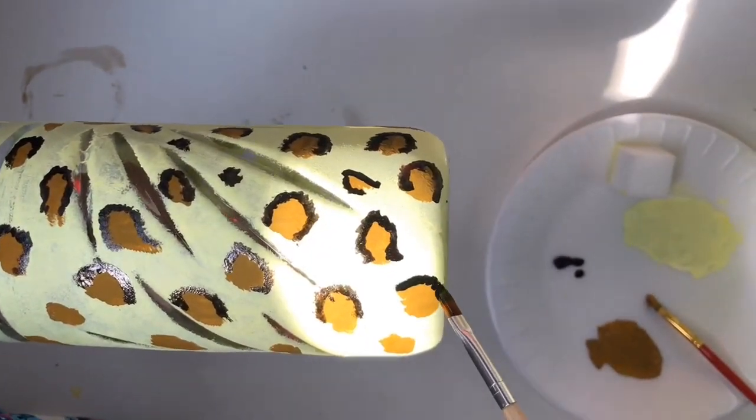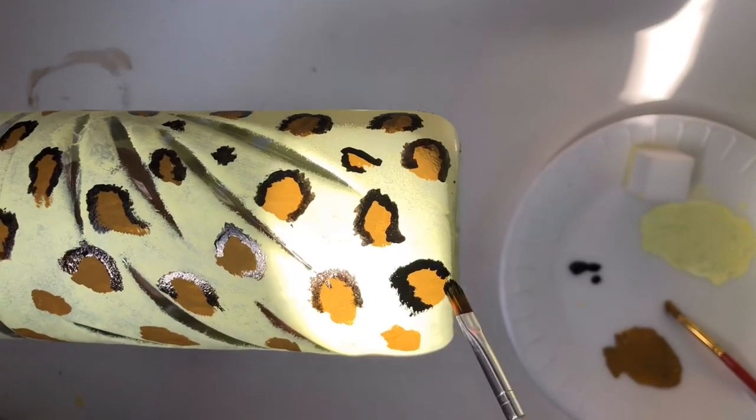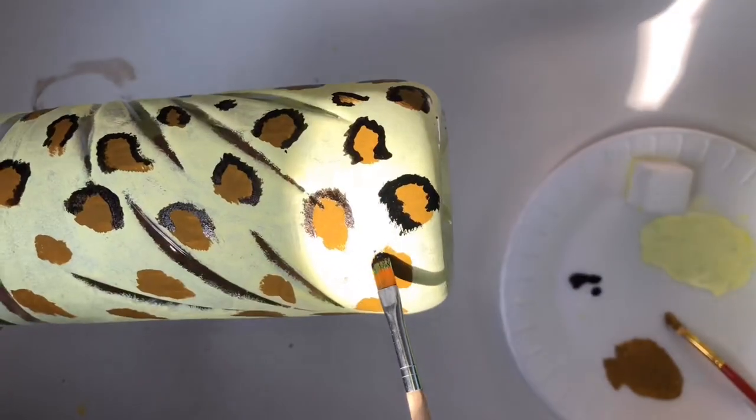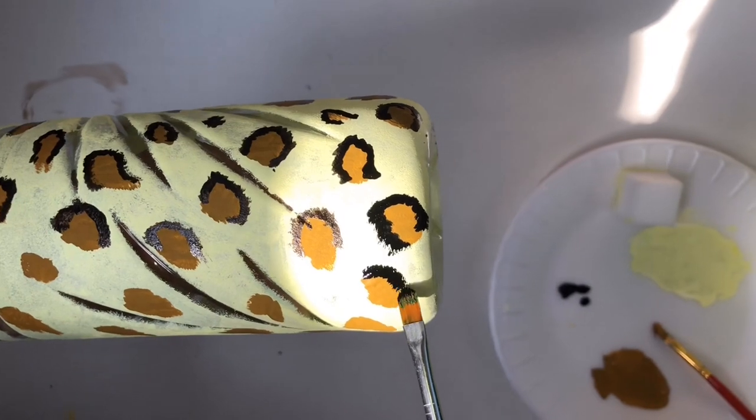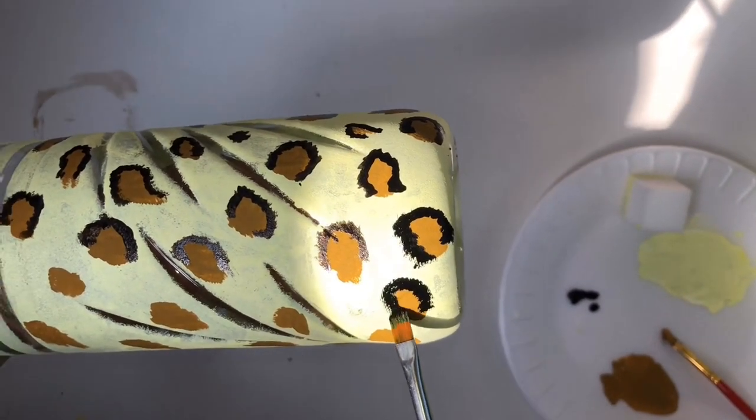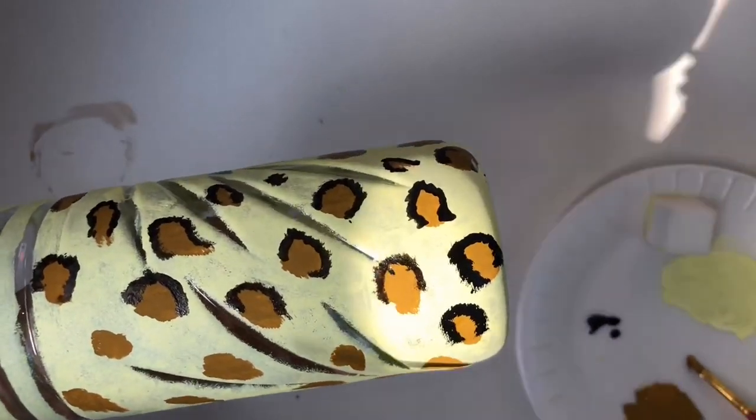You can also simply use your black paint to do the exact same thing if you don't have or don't want to use nail polish. Just dab the paint on the outside of the patches like I showed you before.